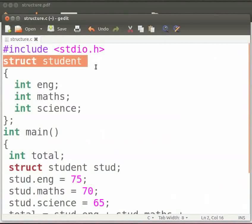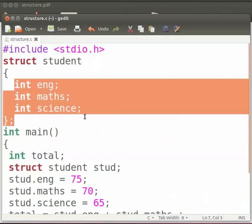Here we have declared a structure as student. Then we have declared three integer variables as English, Maths and Science. Variables defined under the structure are called members of the structure.